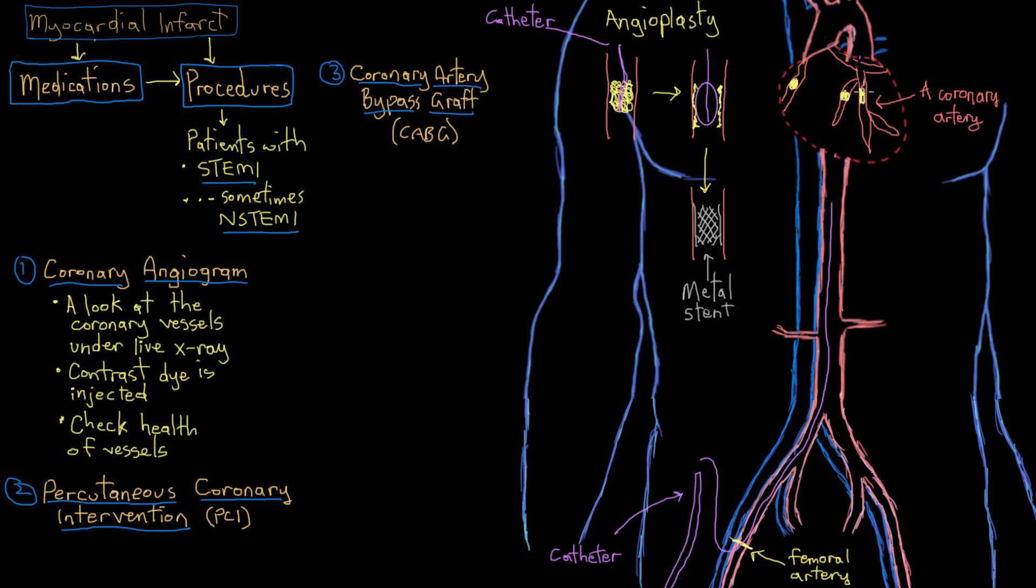And so you can just kind of imagine that if somebody has triple vessel disease, it's really not going to be easy for them to get oxygen from their coronary artery up here down to this part of the heart down here, because there's this huge blockage in the way.